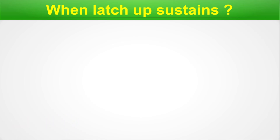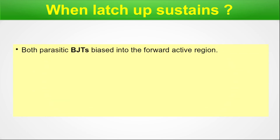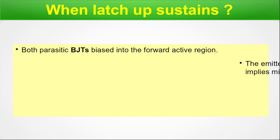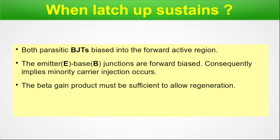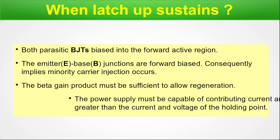Now we discuss when latch-up sustains. The latch-up sustains when both parasitic BJTs are biased into the forward active region, meaning the emitter-base junctions are forward biased and minority carrier injection occurs. The beta-gain product must be sufficient to allow regeneration. Additionally, the power supply must be capable of contributing current and voltage greater than the current and voltage of the holding point.